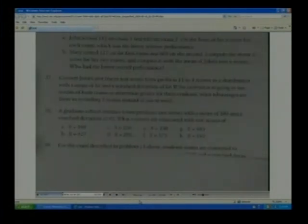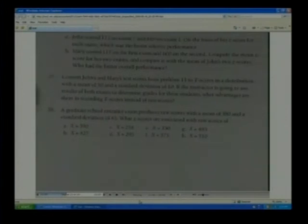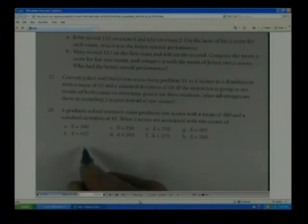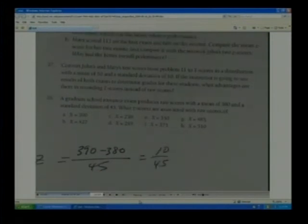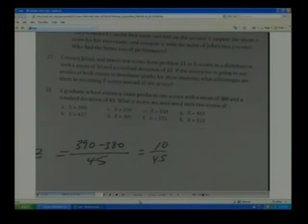Let's look at another one right quick. I have a graduate school entrance exam that produces raw scores with a mean of 380 and standard deviation of 45. Find the z-score associated with a raw score of 390. So let's try this first one: 390 minus 380 over 45, that's going to give me the z-score. So it's going to be 10 over 45, whatever value that is. I didn't bring the calculator with me, but just setting it up I think is the best thing to do.